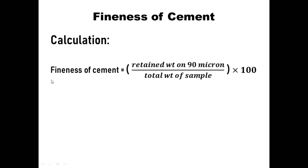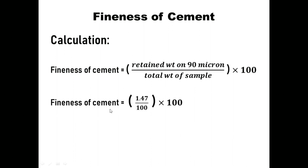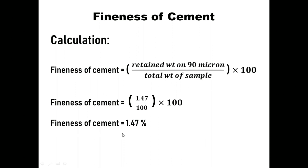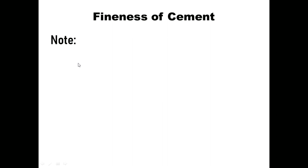For the calculation, the formula is: fineness of cement = (retained weight on 90 microns ÷ total weight of sample) × 100. Putting in the values: fineness = (1.47 ÷ 100) × 100 = 1.47%. Fineness of cement is always expressed as a percentage.